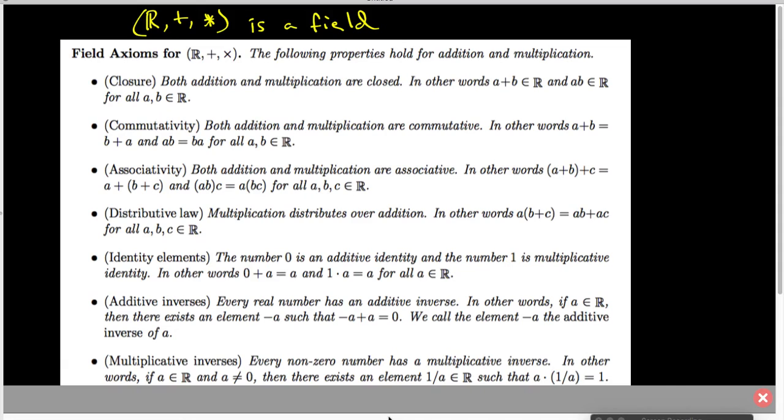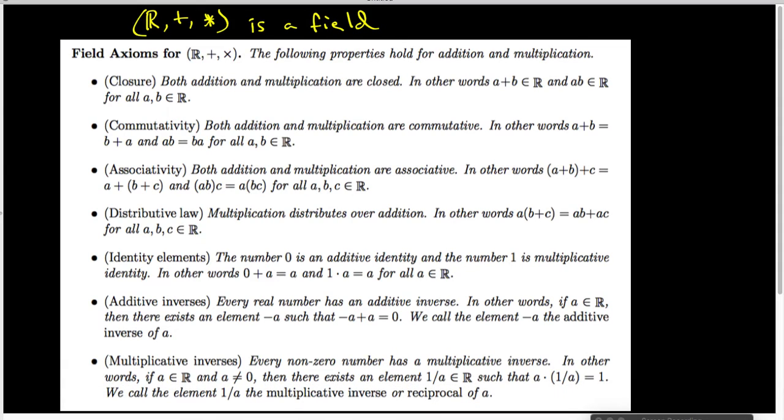We also have to have multiplicative inverses. And multiplicative inverses exist only when A is not equal to zero. So if A is not equal to zero, then there is an element that we're going to call the reciprocal, which is 1 over A, such that A times 1 over A is equal to 1. And that 1 over A is called the multiplicative inverse, or the reciprocal of A.